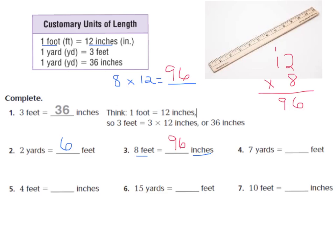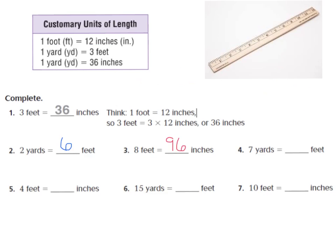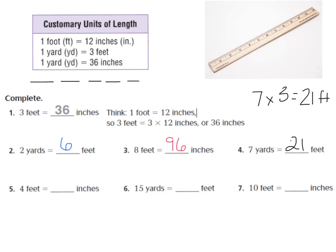Number 4: 7 yards is equal to how many feet? According to the chart, I know 3 feet equals 1 yard. Our equation will be 7 times 3. I know 7 times 3 to be 21 feet. Let's see if that makes sense — if I have 1, 2, 3, 4, 5, 6, 7 yards, and each yard equals 3 feet, this is how you can show a model. When you add that all up, our answer makes sense. Remember, multiplication is just repeated addition: 3 plus 3 plus 3 plus 3 plus 3 plus 3 plus 3 equals 21.